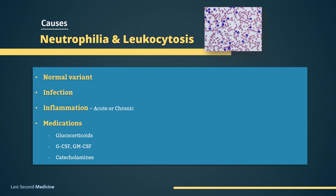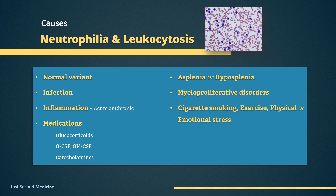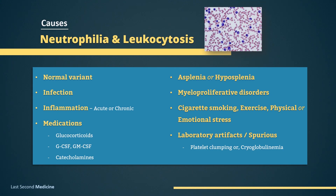Causes other than infection or medications include asplenia or hyposplenia, and myeloproliferative disorders. Leukocytosis can sometimes be found with cigarette smoking, exercise, and various types of physical or emotional stresses. It can also be due to laboratory artifacts or spurious causes, seen in platelet clumping or cryoglobulinemia.